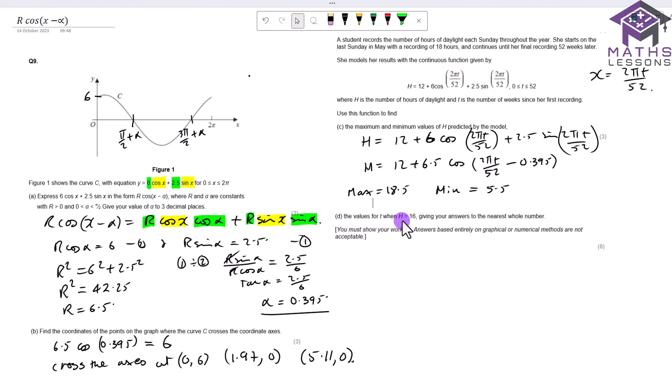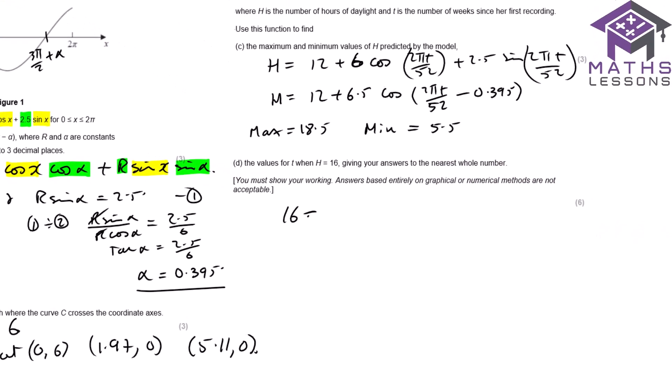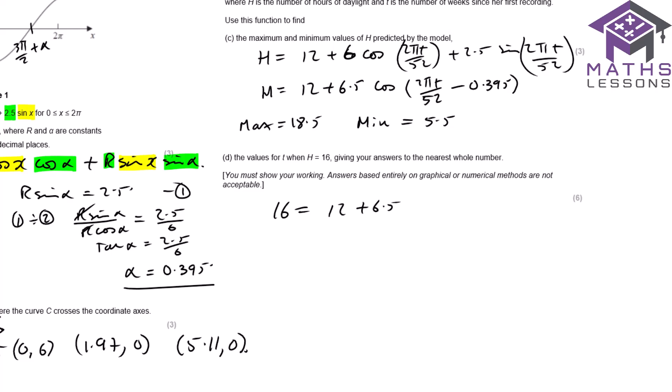Now part D, we want to find out the values of t for when h is equal to 16. Give your answer to the nearest whole number. So we're going to have 16 equals 12 plus 6.5 cos 2 pi t over 52 minus 0.395. And therefore we take off 12, we get 4, so we're going to get 4 over 6.5 equals cos of 2 pi t over 52 minus 0.395.